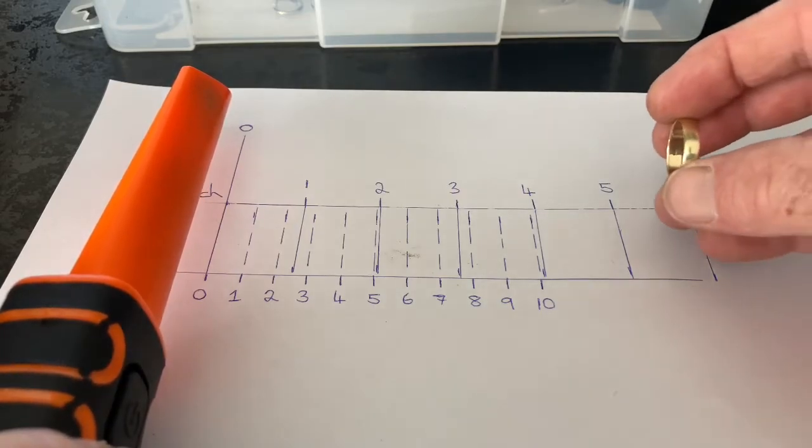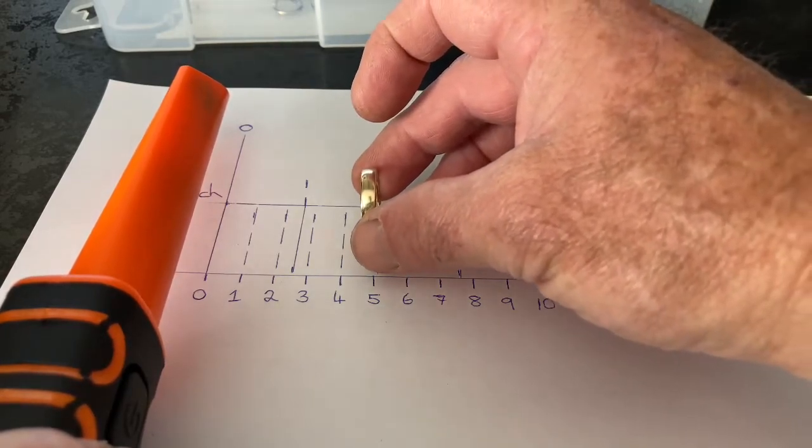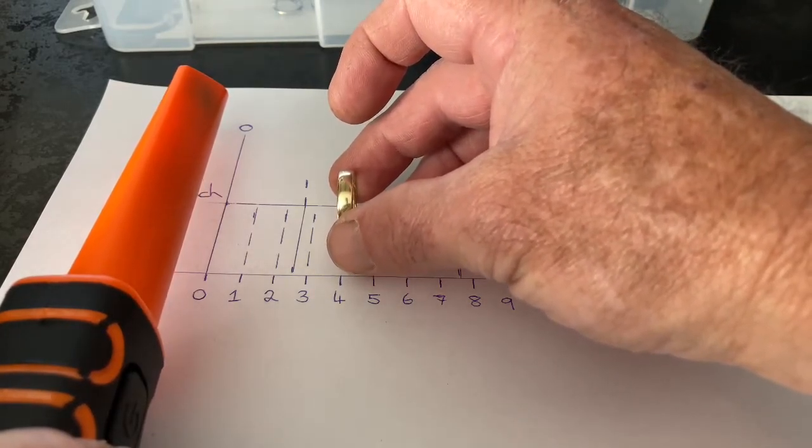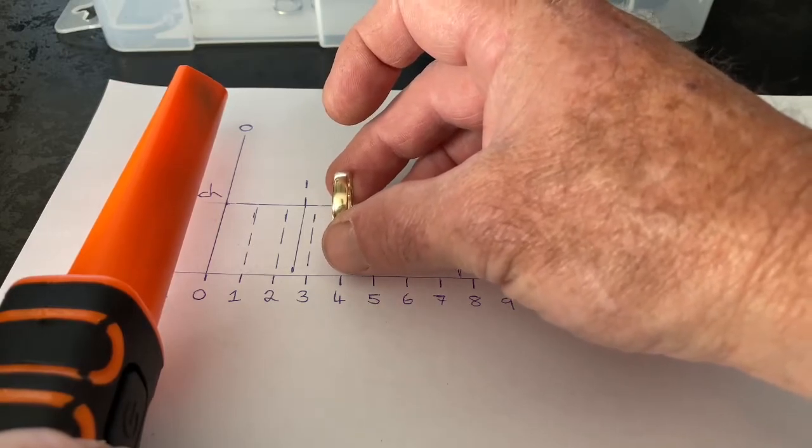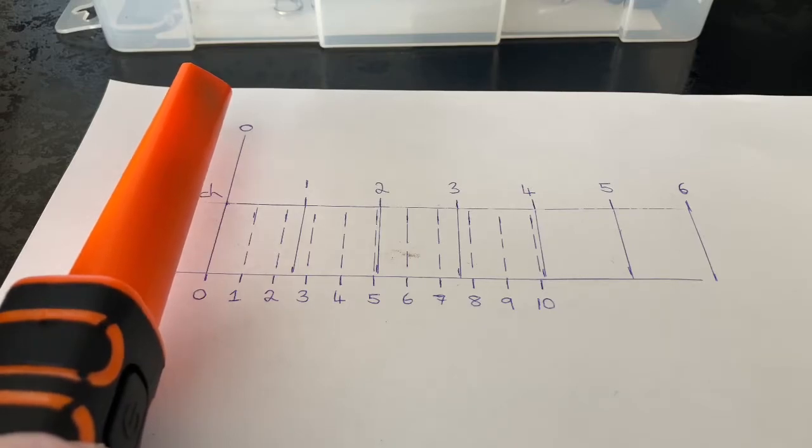And the nine karat gold ring. Okay, so that's about four centimeters or close to an inch and a half.